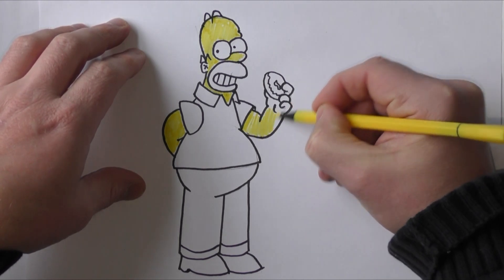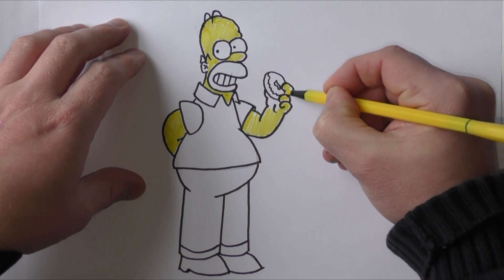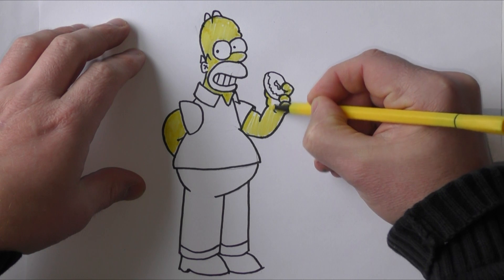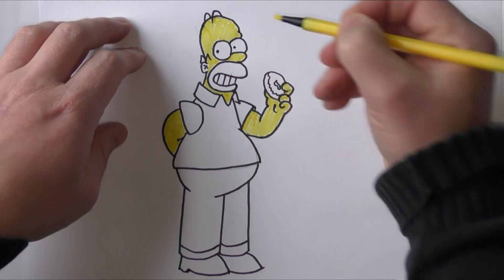So obviously Homer's got a white t-shirt on, so we don't need to color in his t-shirt. We'll just finish off the yellow here. There we go. A little bit on his nose, there we go.